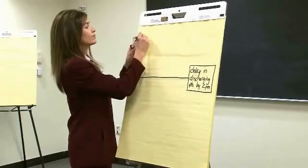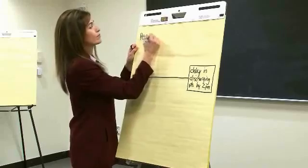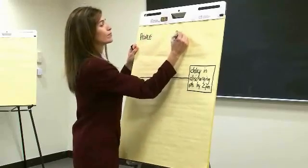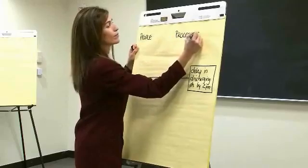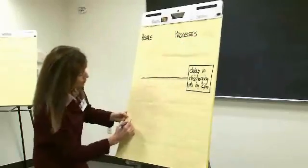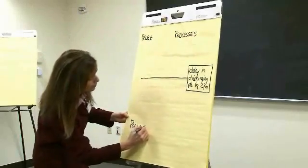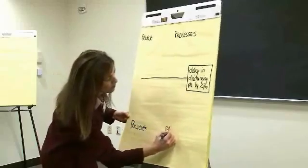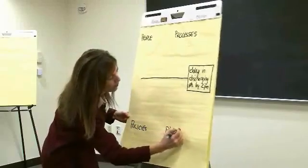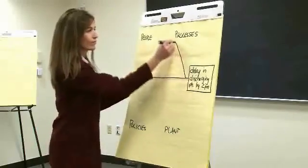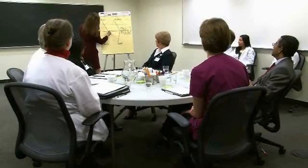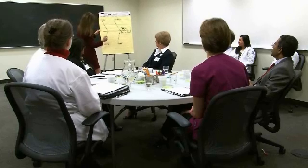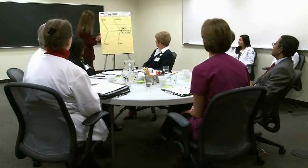The major categories this team is using are people, processes, policies, and plant. Write two categories above the backbone line and two below the backbone line. Then draw lines connecting each major cause heading to the backbone. Here is a tip: make sure to leave enough space on the flip chart between the headings and the backbone to record numerous causes. Often, the causes are not equally distributed — some problems will have causes that clump around only one or two headings.